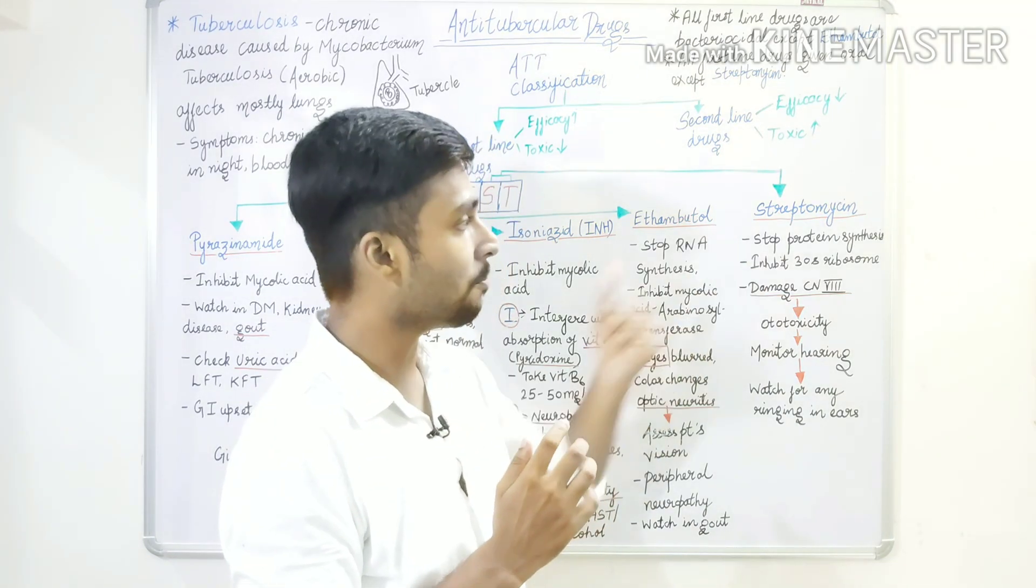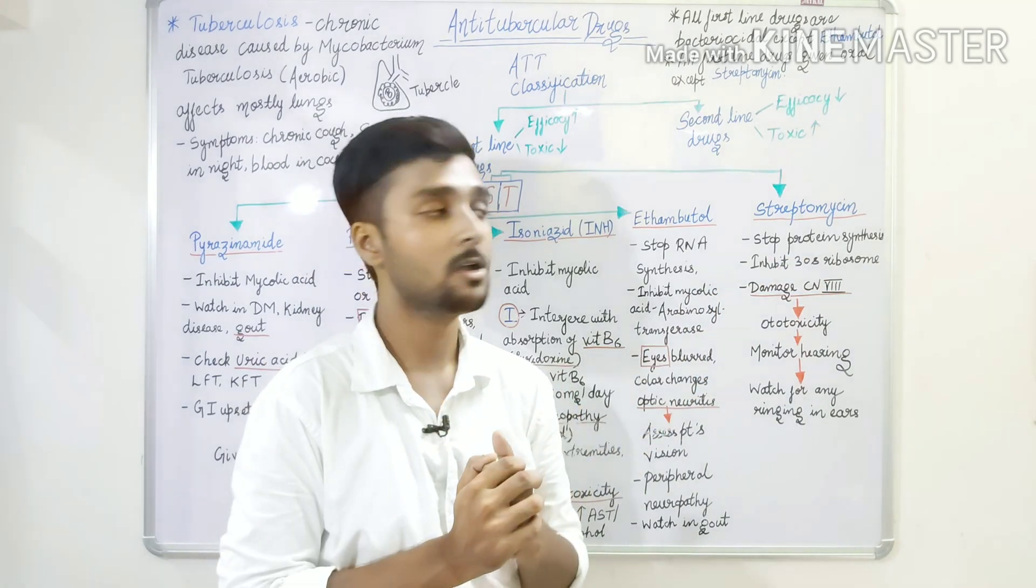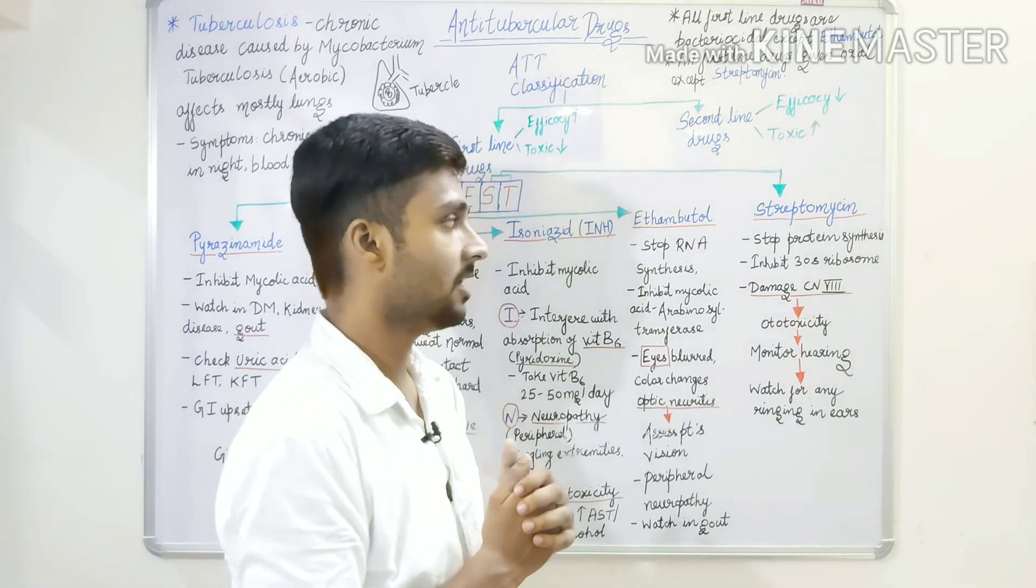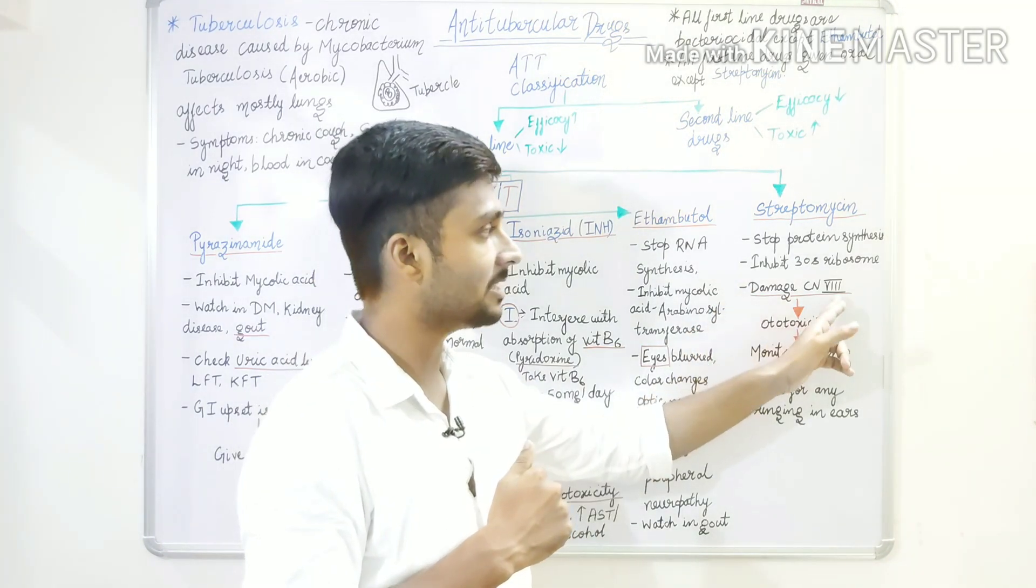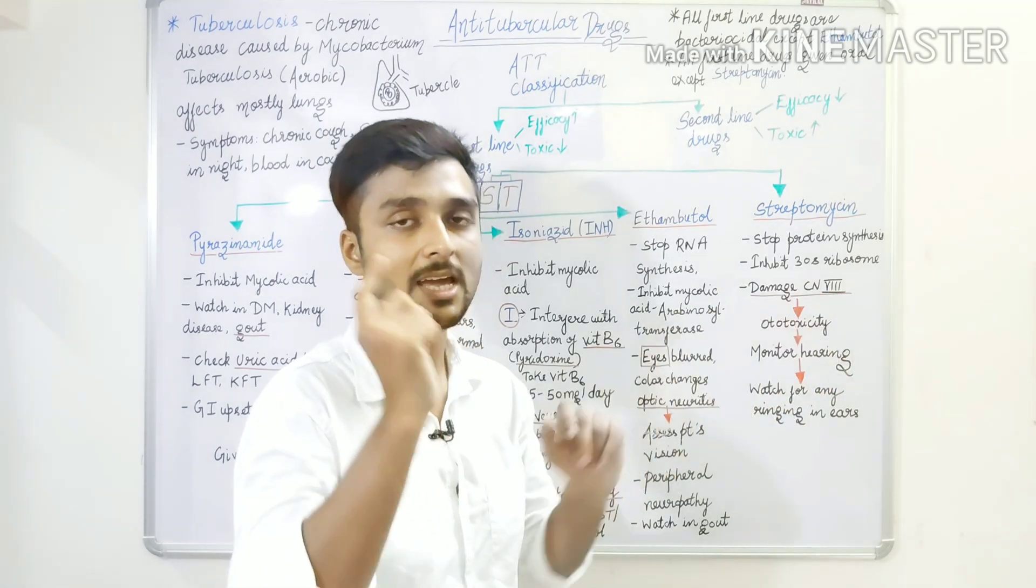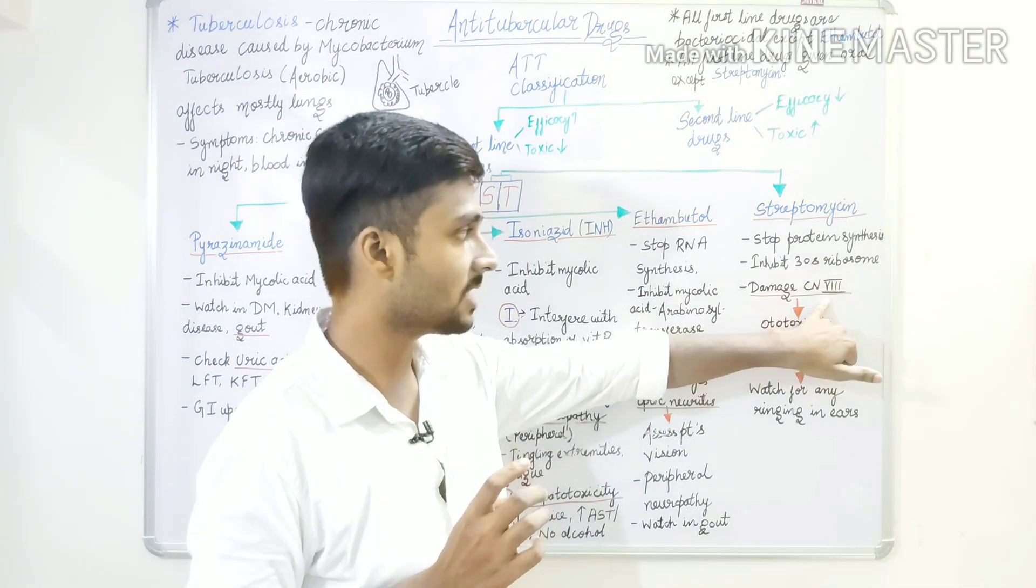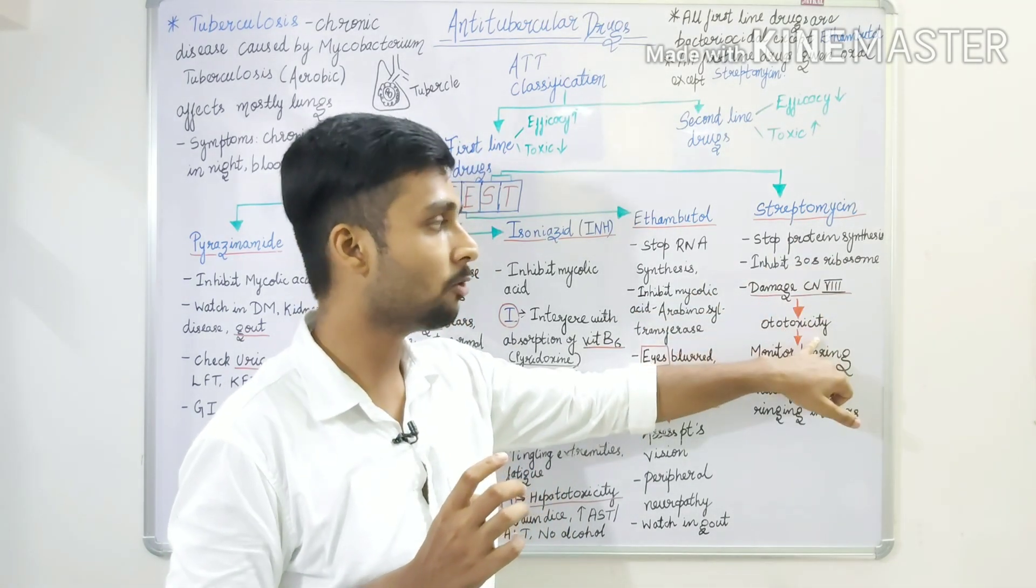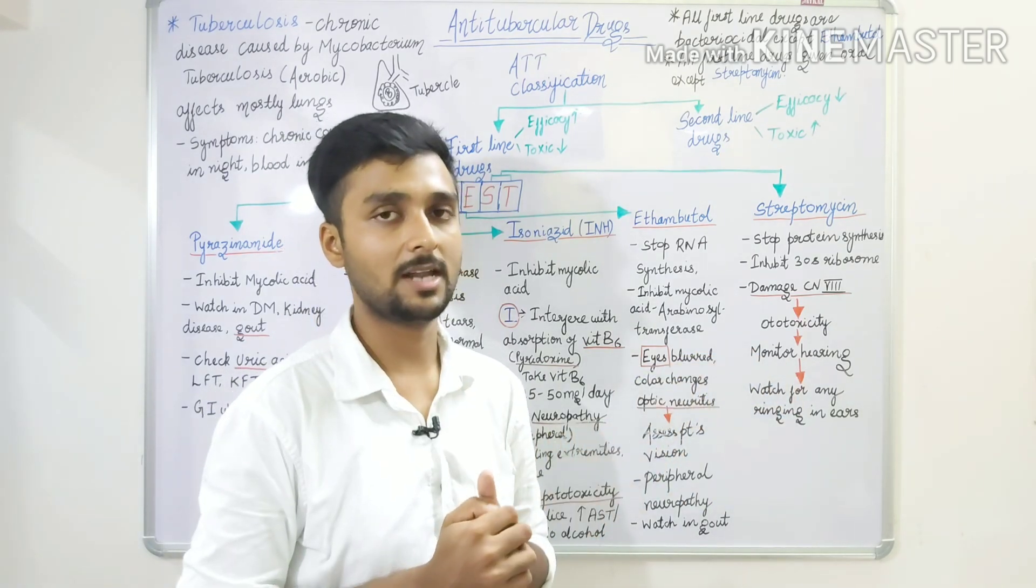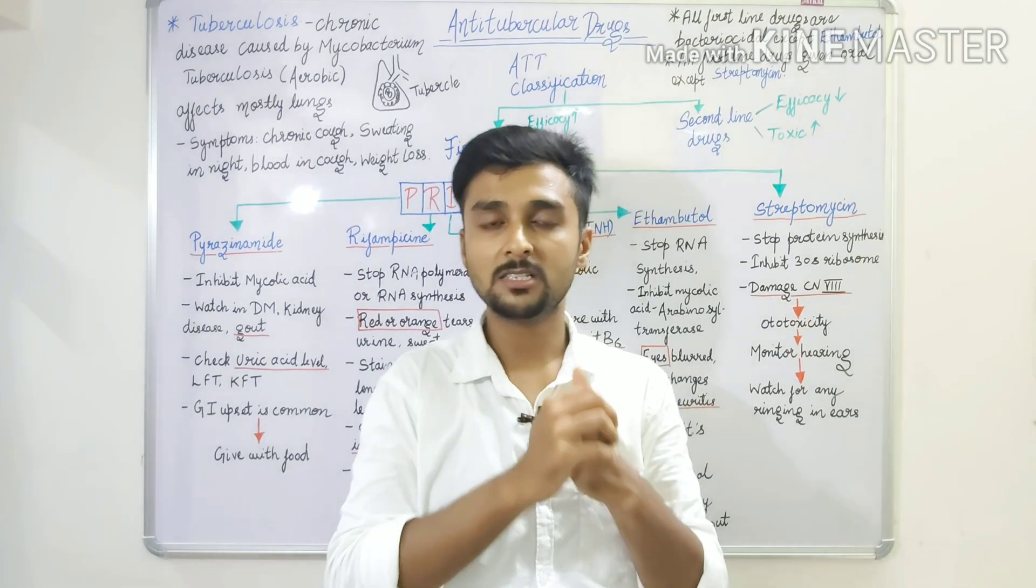Last is Streptomycin. It stops protein synthesis and inhibits 30S ribosomes, so our bacteria will not grow. This is a side effect: it damages the vestibulocochlear nerve, cranial nerve number 8, which helps our hearing and balance. If we see this drug effect, what happens to the patient? Ototoxicity. So, we have to check the patient's hearing. In this way, we can remember them all.